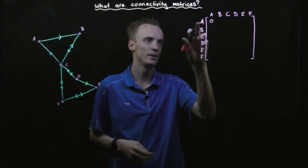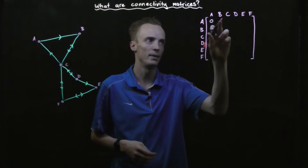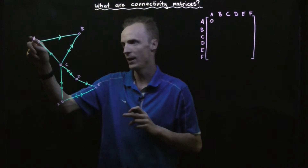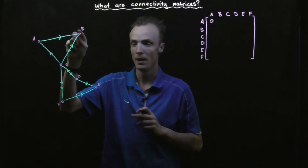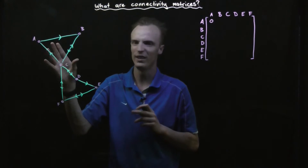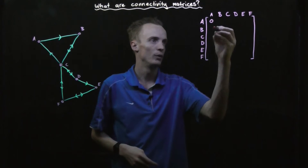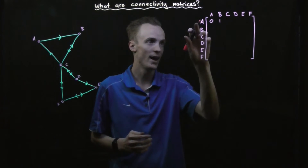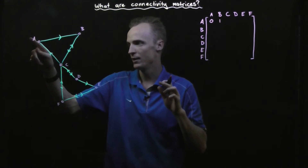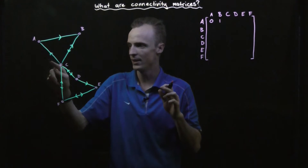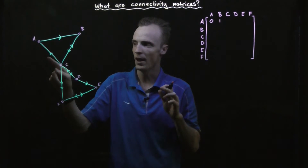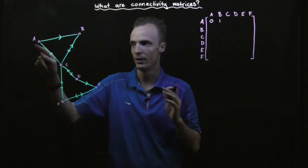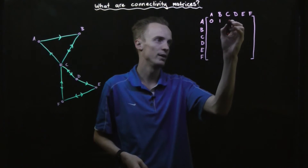If we were to start at node A and look at how many different one-step routes there are to node B, we could start here and take one step to B — there's no other one-step route, so we put one. To get from A to C, there's no way to do it in one step because the arrow indicates that this connection only travels from C to A, so we put a zero here.